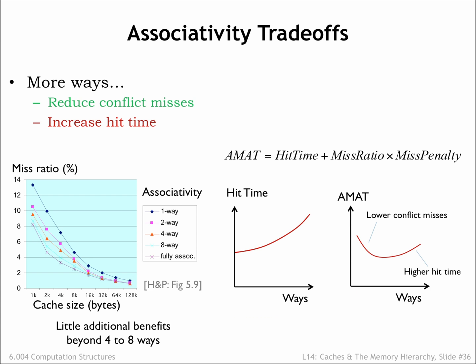As with block size, it's possible to have too much of a good thing. There's an optimum number of ways that minimizes the average memory access time. Beyond that point, the additional circuitry needed to combine the hit signals from a large number of ways will start to have a significant propagation delay of its own, adding directly to the cache hit time and the average memory access time. The chart on the left shows that there's little additional impact on the miss ratio beyond 4 to 8 ways. For most programs, an 8-way set associative cache with a large number of sets will perform on a par with the much more expensive fully associative cache of equivalent capacity.